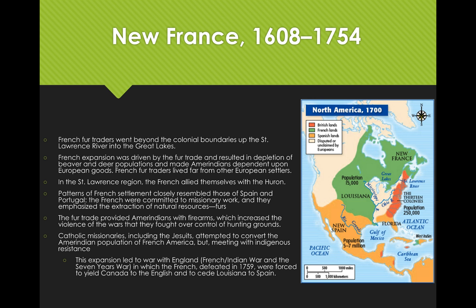By 1750, there were approximately 50,000 French settlers. The fur trade provided Ameri-Indians with firearms, which increased the violence of wars fought over control of hunting grounds. Catholic missionaries, including the Jesuits, attempted to convert the Ameri-Indian population of French America but met with quite a bit of resistance, and as a result turned their attention to work in the French settlements. These settlements were small, grew slowly, and this pattern allowed Ameri-Indians in French America to preserve a greater degree of independence than in Spanish, Portuguese, or British colonies.